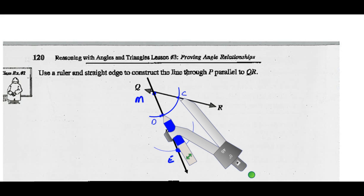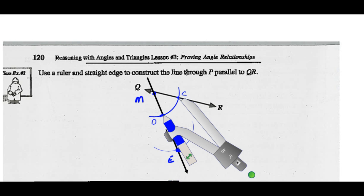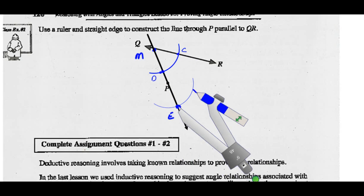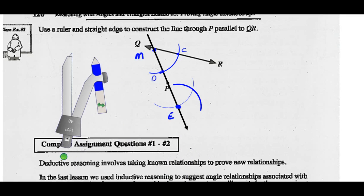Keeping this radius of our compass, put the point on E and draw a third arc that intersects our second arc. Keeping this radius, put the point on E on the line here. Let's draw another arc that intersects this one. Now we can mark that intersection point — they call it F — so this point here is point F. Use the ruler and draw a line that goes through P and F.